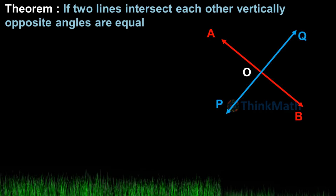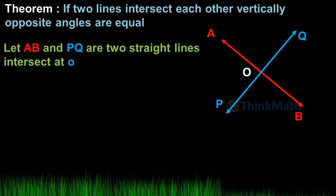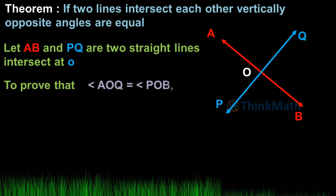Let a, b and p, q be two straight lines intersecting at O. To prove that angle AOQ is equal to angle POB.